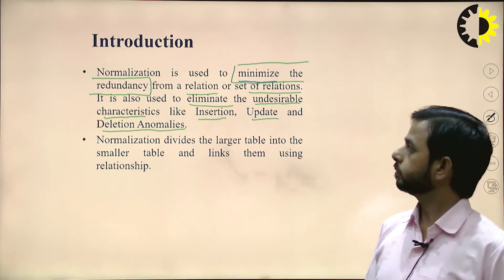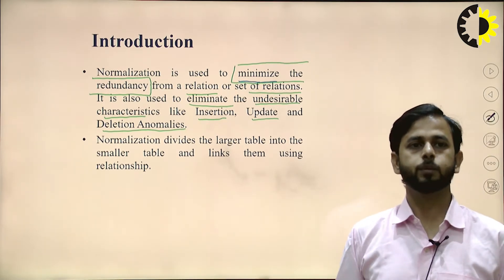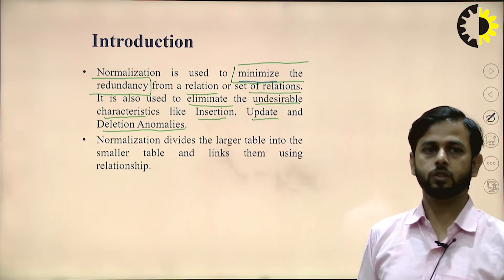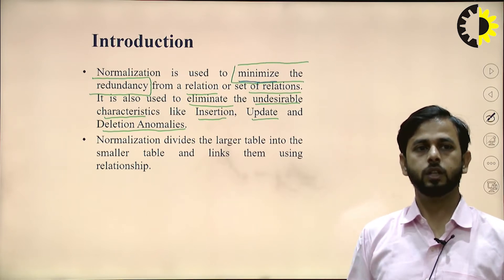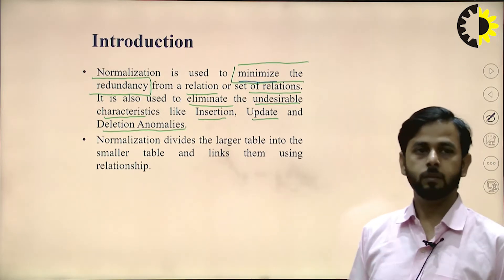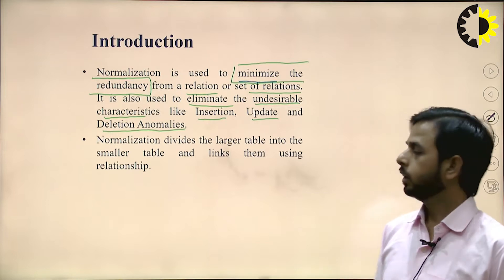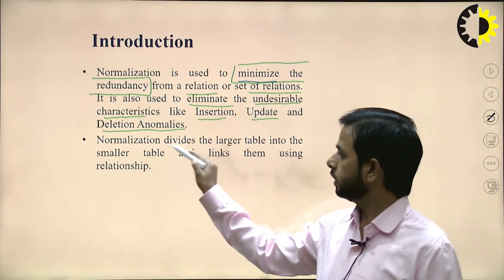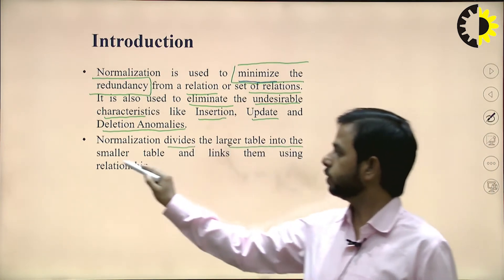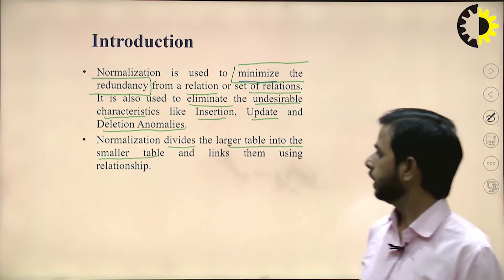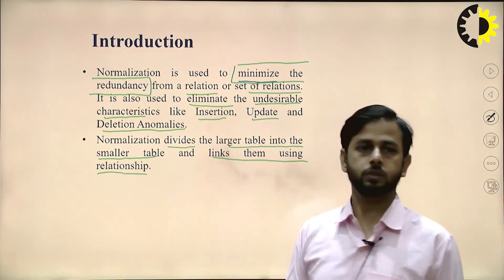It can eliminate various types of anomalies such as insertion anomalies, updation anomalies, and deletion anomalies. It can eliminate them and minimize the redundancy. Normalization also divides the larger table into smaller tables and links them using some relationship.